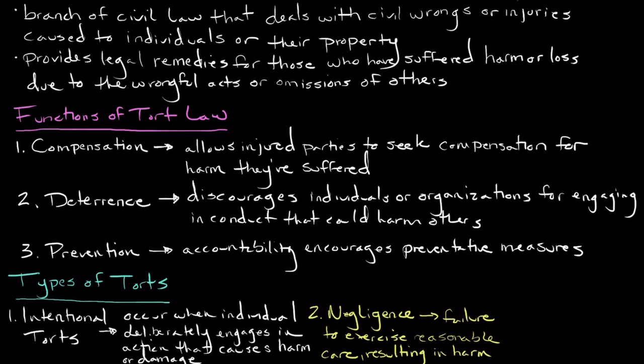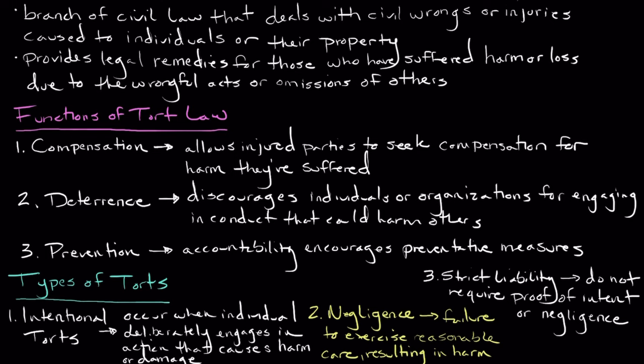The last type of tort is called strict liability. Strict liability torts do not require any sort of proof of intent or negligence. Instead, they focus on the defendant's responsibility for engaging in inherently dangerous activities or keeping dangerous substances or animals. An example of this would be a product liability case where a manufacturer is held liable for defective products.